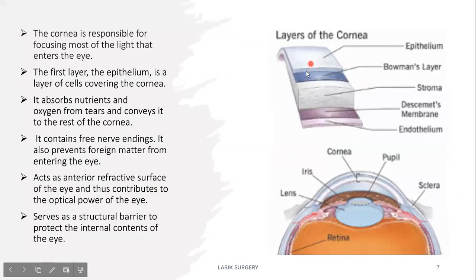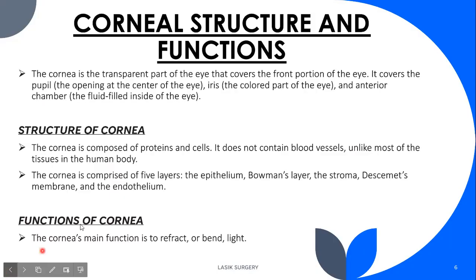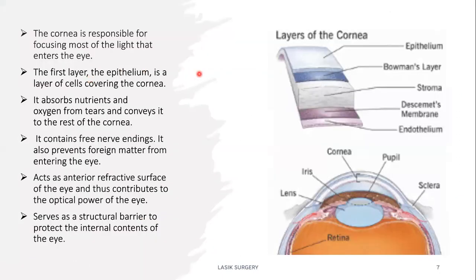As shown in the diagram, the first layer is the epithelium, then comes Bowman's layer, the stroma, Descemet's membrane, and the endothelium. The cornea's main function is to refract or bend light that helps the eye see. The cornea is responsible for focusing most of the light that enters the eye. The epithelium layer absorbs nutrients and oxygen and nourishes the rest of the cornea. It contains nerve endings, and it also prevents foreign material from entering the eye. The cornea also serves as a structural barrier to protect the internal contents of the eye.